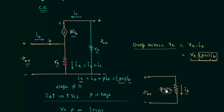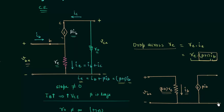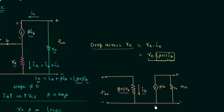So this is the input side, and on the output side we have the dependent current source and the output resistance RO. The dependent current source has the value beta times IB. This is the direction of the current beta times IB, and this is the RE model of common emitter configuration. We have to consider the output resistance RO, and the drop across this resistance is equal to VCE, the output voltage. So from now onwards we will use this RE model for common emitter configuration.